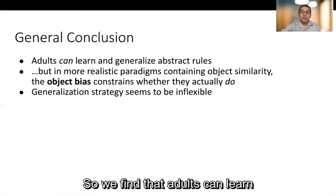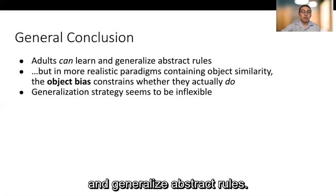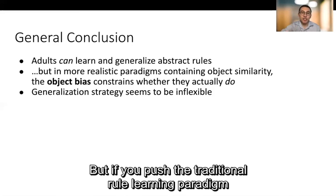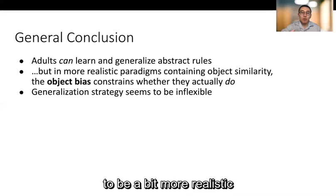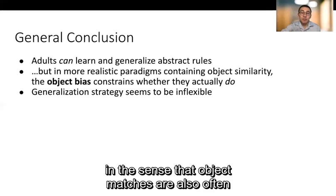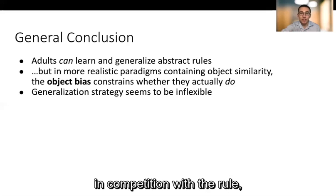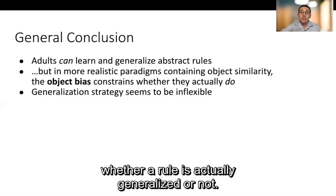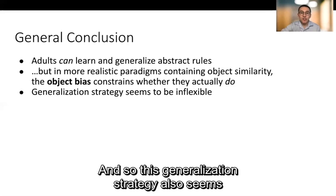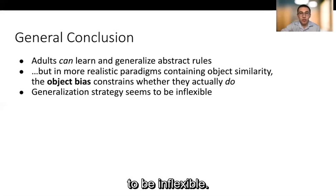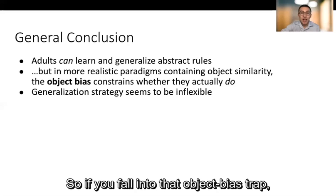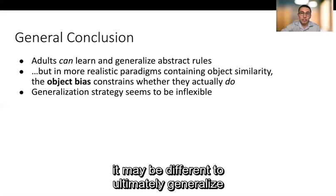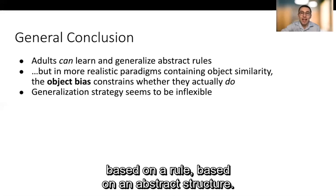So we find that adults can learn and generalize abstract rules, but if you push the traditional rule learning paradigm to be a bit more realistic in the sense that object matches are also often in competition with the rule, we find that the object bias constrains whether a rule is actually generalized or not. And so this generalization strategy also seems to be inflexible. So if you fall into that object-based trap, it may be difficult to ultimately generalize based on a rule, based on the abstract structure.